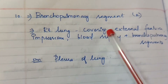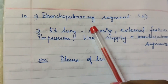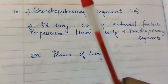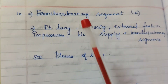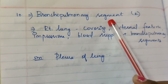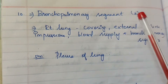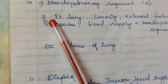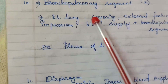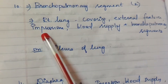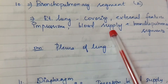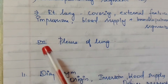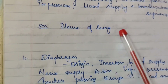Tenth question: bronchopulmonary segments — asked for 15 marks. Left and right lungs bronchopulmonary segments are covered. Also, 15 marks asked for features of right lung: coverings, external features, impressions, blood supply, and bronchopulmonary segments. Five marks on pleura of lungs also mentioned.